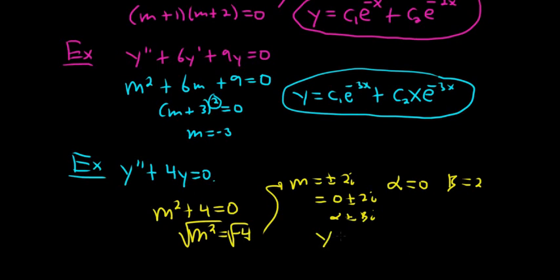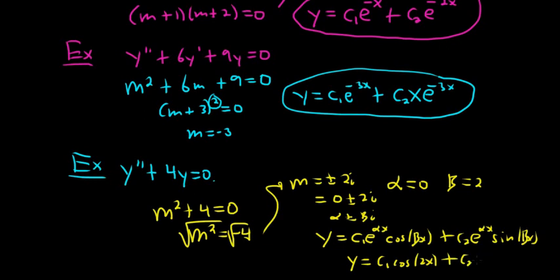And so the formula was c1 e to the alpha x cosine beta x, plus c2 e to the alpha x sine beta x. Then you just plug everything in. e to the 0 is 1, so you just get c1 cosine 2x plus c2 sine 2x.